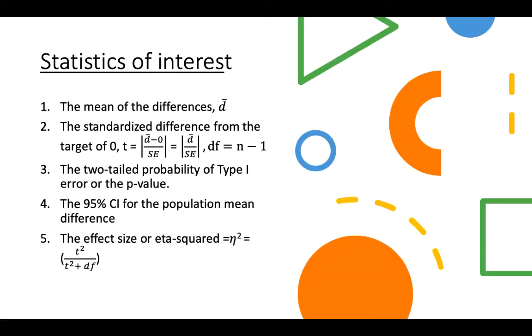The standardized difference from the target of zero is your T. T is your standardized differences from the target of zero — how it varies — and this is calculated using error scores. The DF is calculated using sample size minus 1. That's how you get the DF. If I ask you for the sample size, you just take your DF and add 1 to get N.